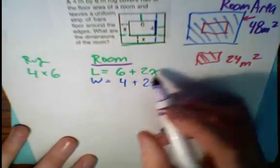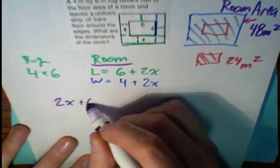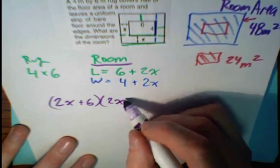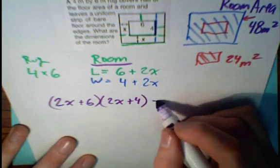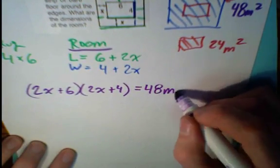Length times width, and I'm going to just reverse this because it's easier to look at. 2x plus 6 times the quantity, 2x plus 4, equals the area of the room, which is 48 square meters.